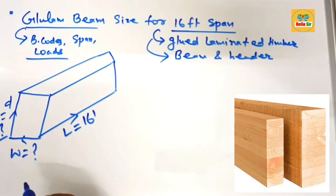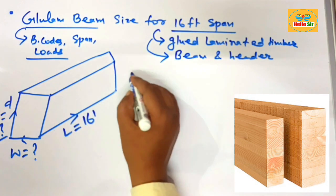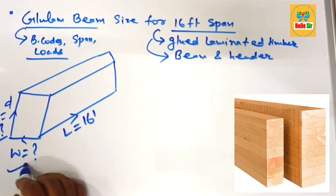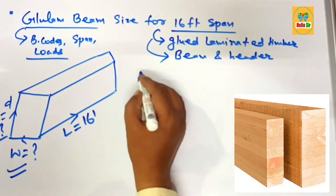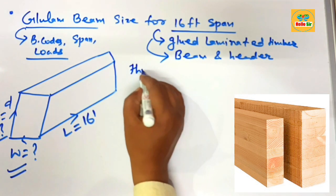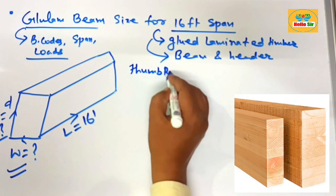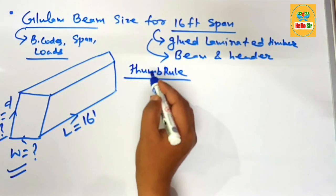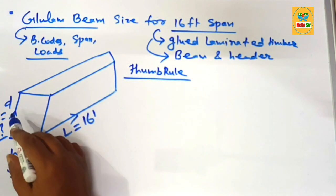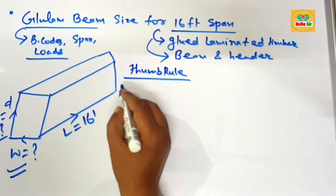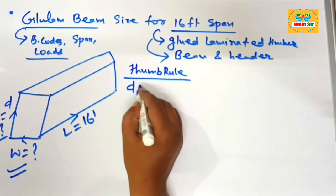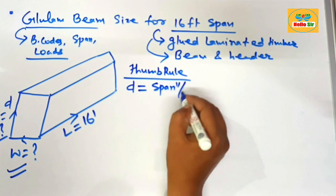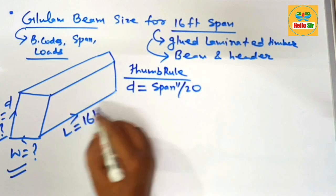To find the size of a glulam beam, you need to find the depth and width section of the beam. We calculate according to the thumb rule. The thumb rule for sizing: the depth section of the beam should equal the span in inches divided by 20.